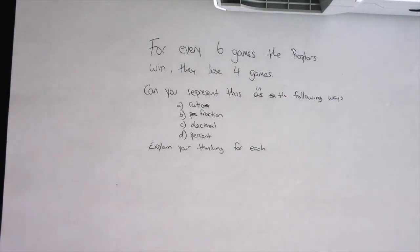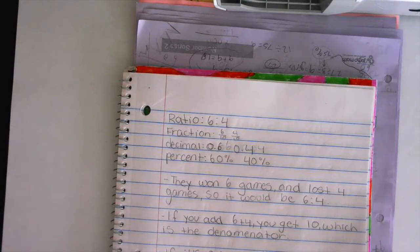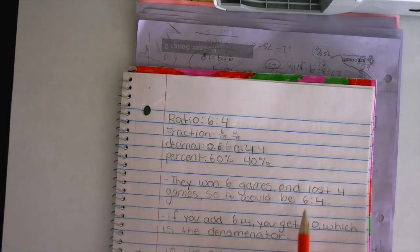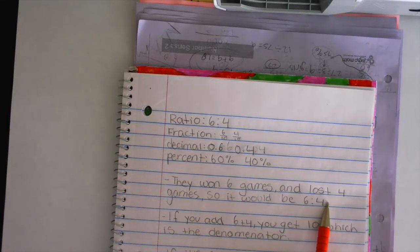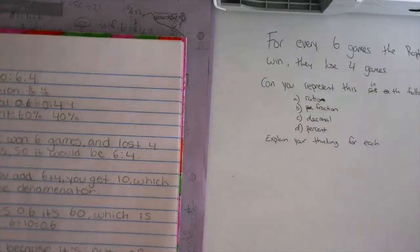Let's go in order. Who can come up and share their ratio with me? Come on up. So your ratio? My group's ratio that we got was six to four because they won six and lost four games, so you put it in order of wins to losses. Or you can do four to six.